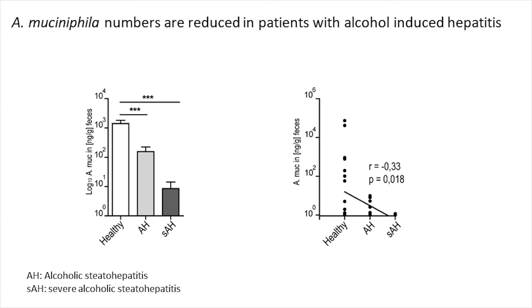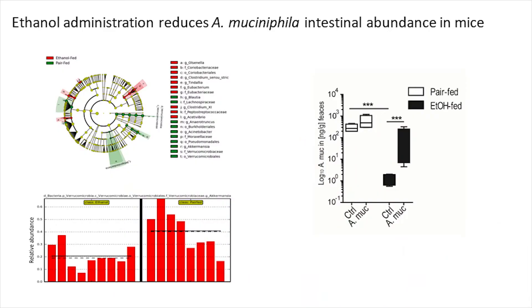First of all, we could demonstrate in humans that patients exposed to ethanol, especially with alcoholic liver disease and alcoholic hepatitis, had a severe decrease in stool Akkermansia muciniphila concentrations. And in the next step we could also demonstrate that mice after administration of ethanol showed a huge decrease in stool Akkermansia muciniphila concentrations.